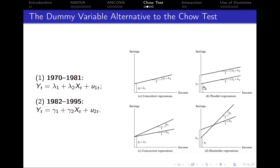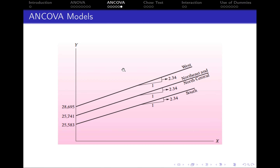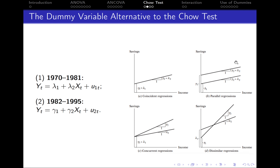In the case of parallel regressions, the intercepts are different but the slopes — lambda 2 and gamma 2 — are exactly the same. This graph indicates the case where the slopes are the same, meaning that x has the same effect on y in both periods. However, the intercepts — the mean values of y — are different in two different periods. It may also happen that the intercepts are the same, but the effect that x has on y is different in two different periods, indicating that lambda 2 and gamma 2 are different.